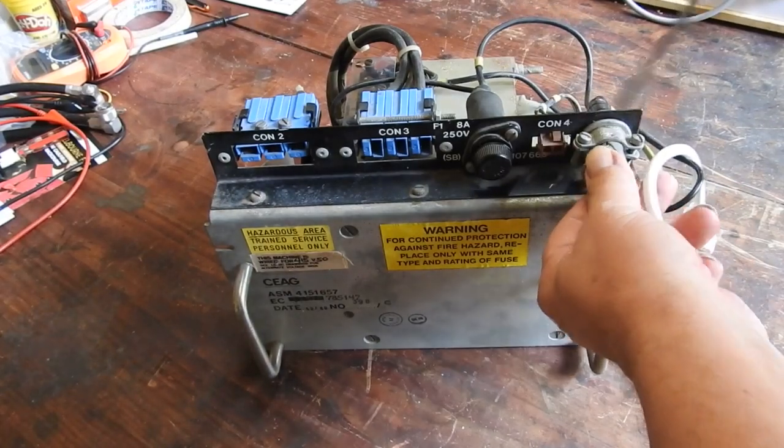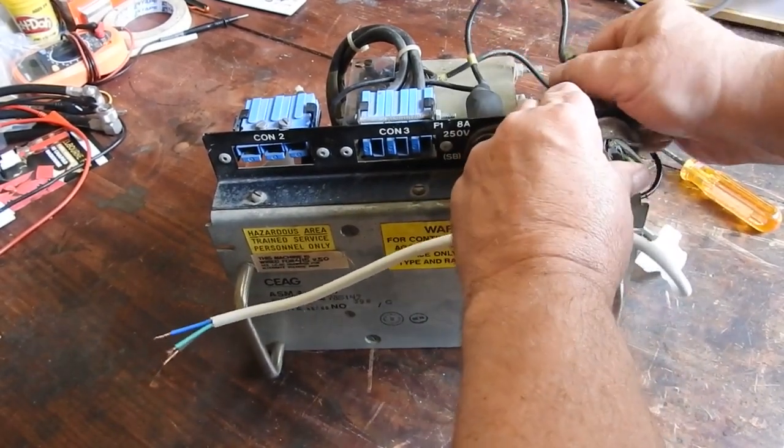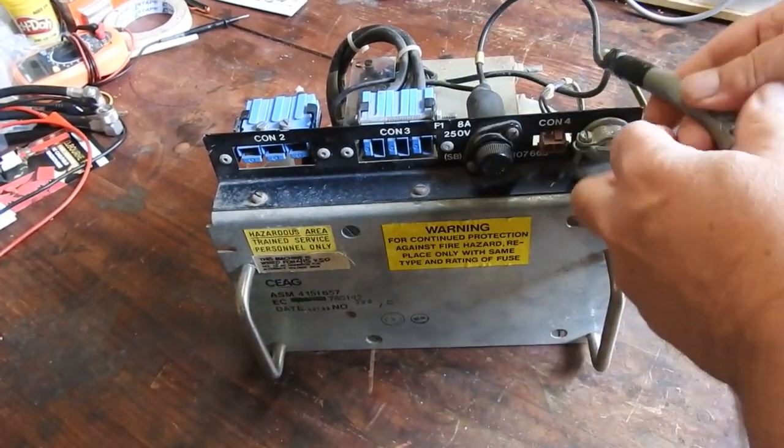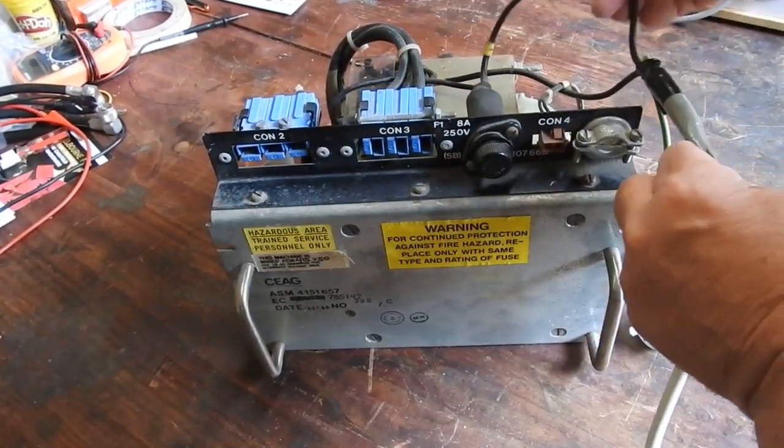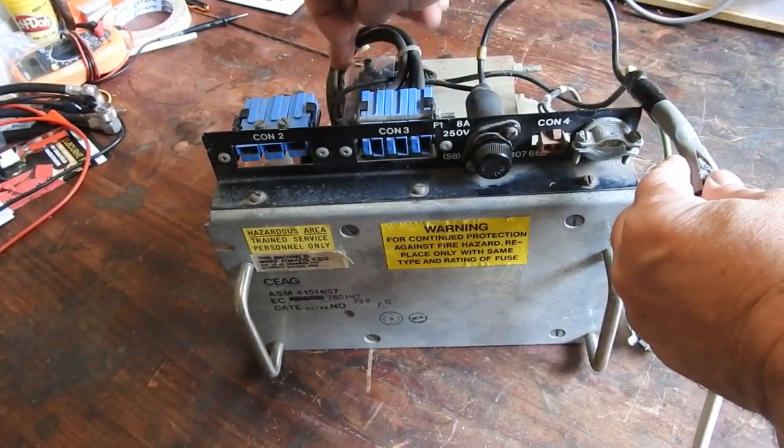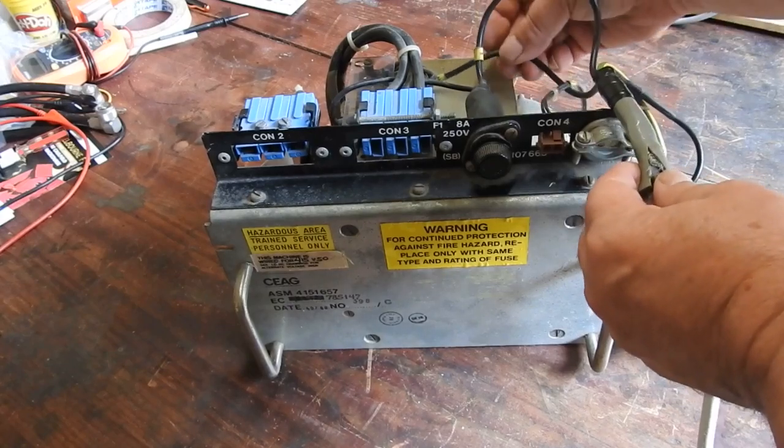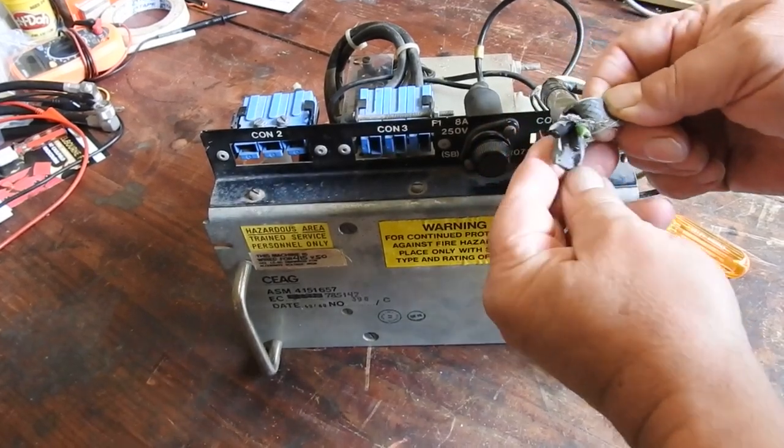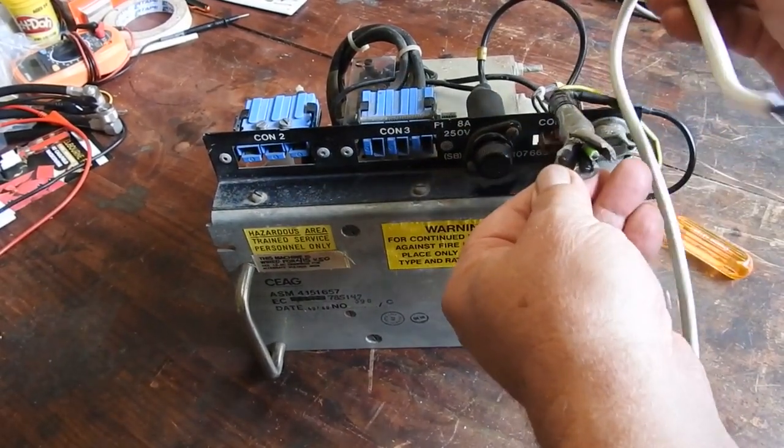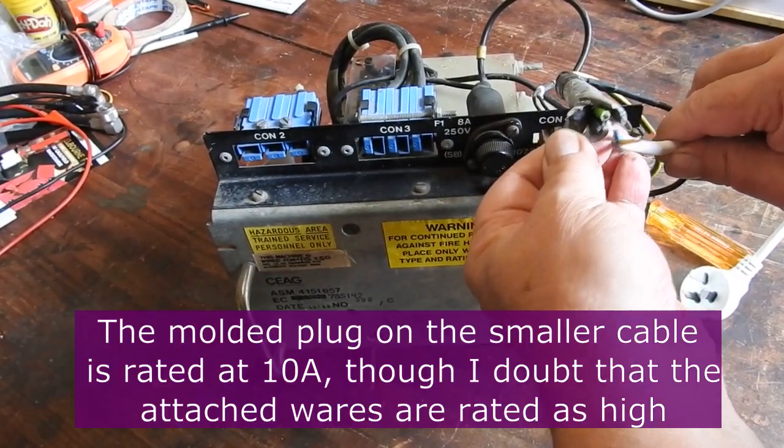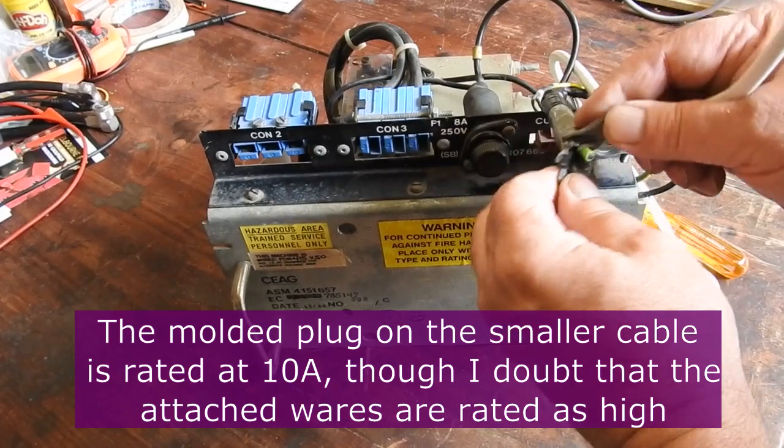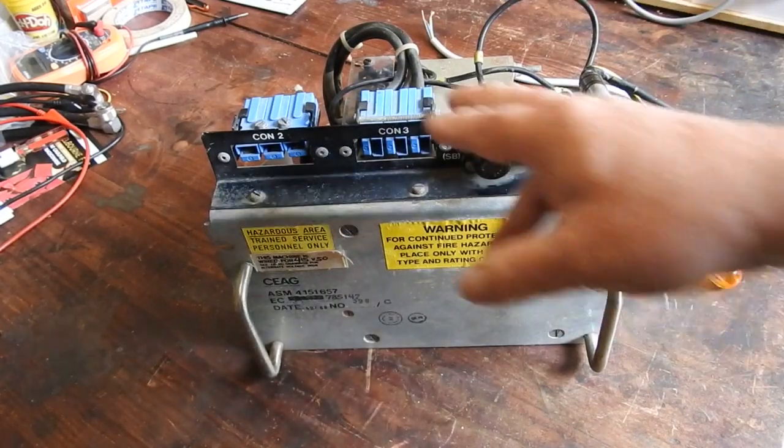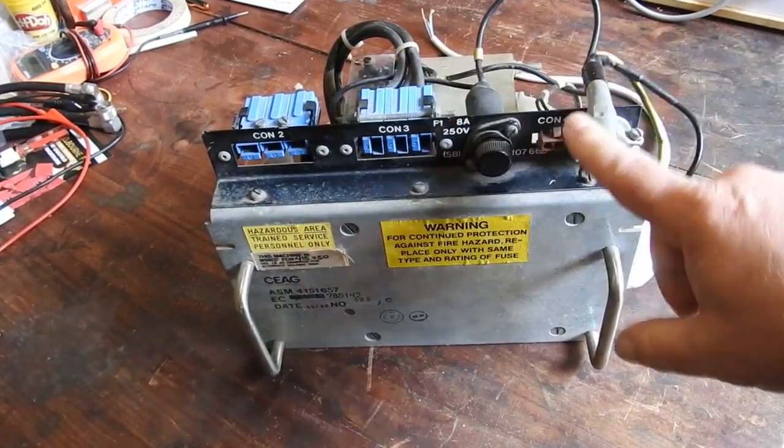This has got a screen and an IRF and mains active and neutral. So the screen and the IRF go to the frame. The active presumably goes via the fuse to the input terminal strip to the transformer and the neutral goes to the other end. But look at these wires compared to these guys. Now this is 10 amp. This has only got to take 8 but look at it.